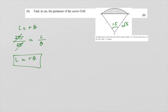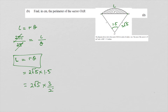You don't need to memorize it — it's just a ratio of the full circle to the sector. Plugging in the values, the arc length is 2 root 5 times 1.5, which equals 2 root 5 times 3 over 2. The 2s cancel, giving 3 root 5. So the arc length is 3 root 5.